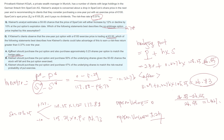So the answer is option A. Kleinert should purchase the put option and also purchase approximately 0.23 shares of stock to match the hedge ratio. This portfolio will earn a return greater than the risk-free rate.